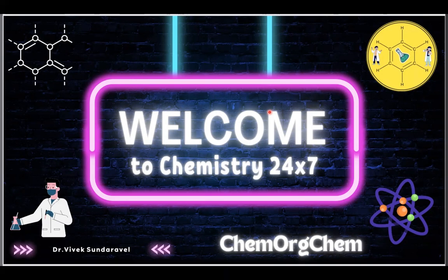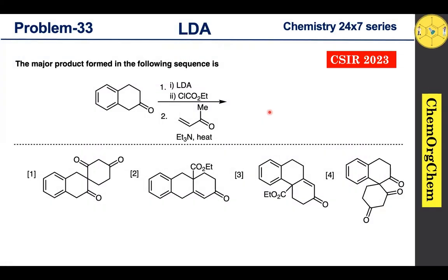Let's dive into today's problem: TSCR 2023. As per this question, the substrate initially reacts with LDA followed by chloroethyl formate in the first step. The second step involves reaction with methyl vinyl ketone under triethylamine under heating conditions to produce a product. There are four options — let's figure out the correct one together.